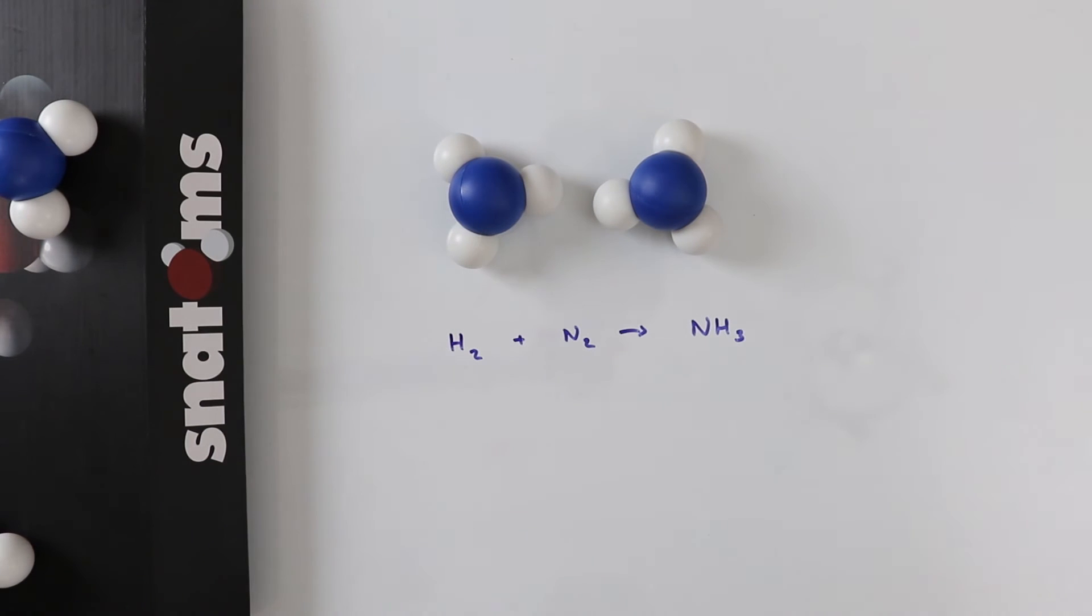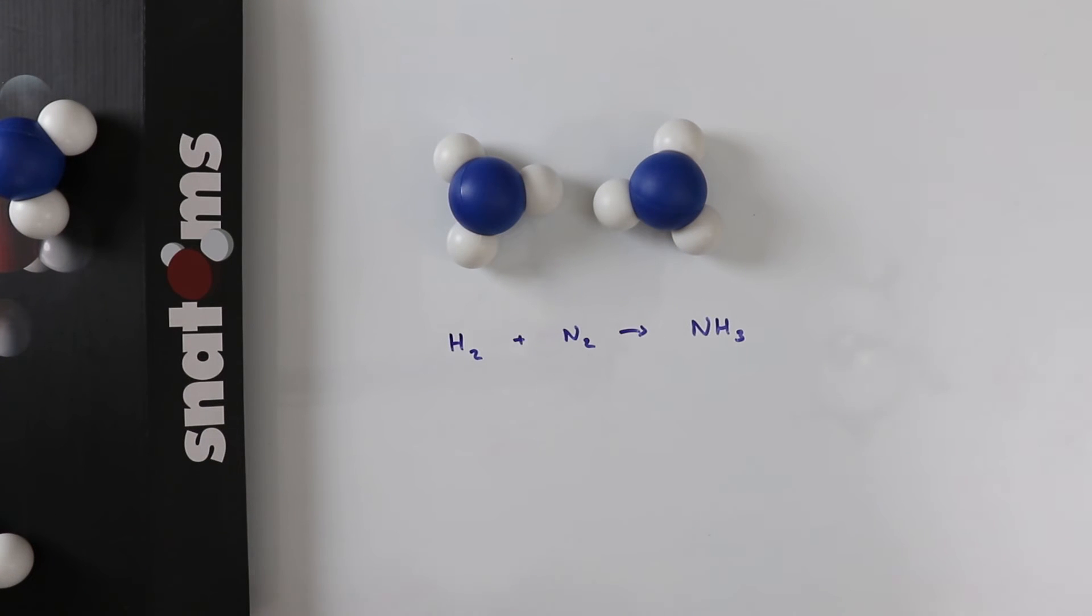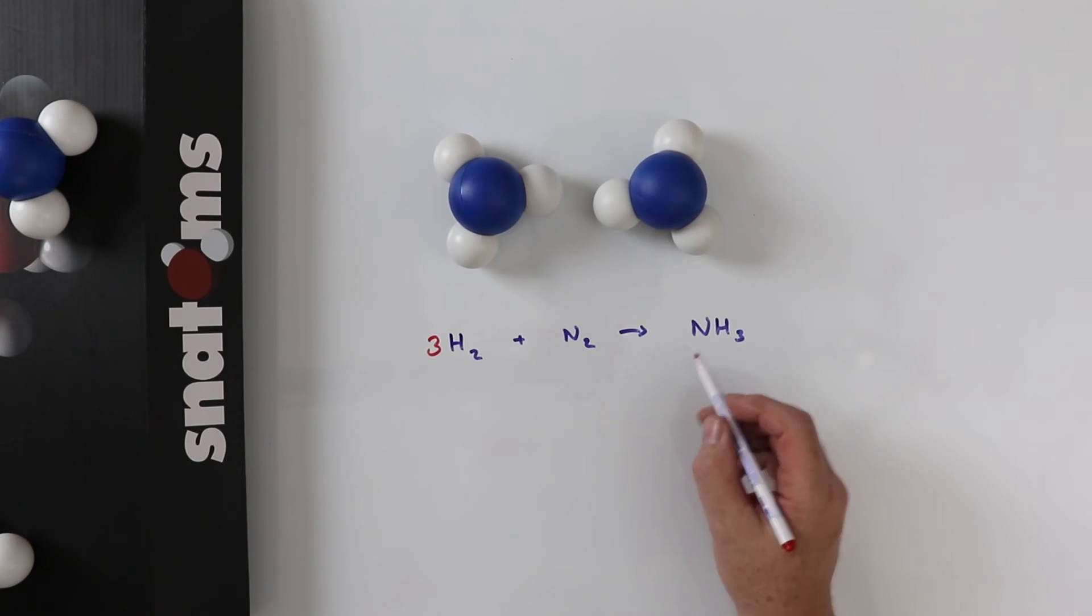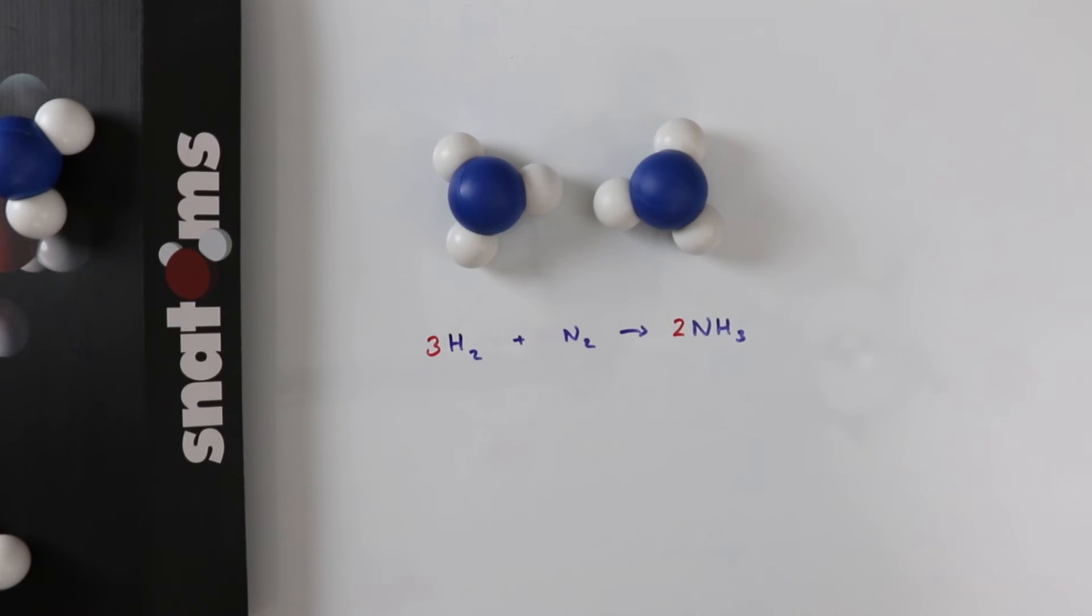The reaction has finished. We've reacted three molecules of hydrogen with one molecule of nitrogen. We don't need to write down the one to give us two molecules of ammonia. We've written down the numbers and the equation is now successfully balanced.